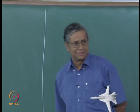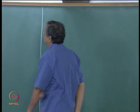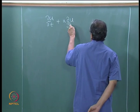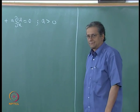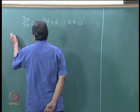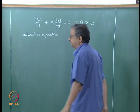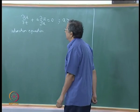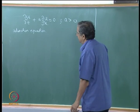Last class we started looking at the linear 1-dimensional first-order wave equation. Let me write the equation: ∂u/∂t + a·∂u/∂x = 0, where a > 0. We also called it the advection equation. It captures the idea of pure propagation — the propagation speed is a.